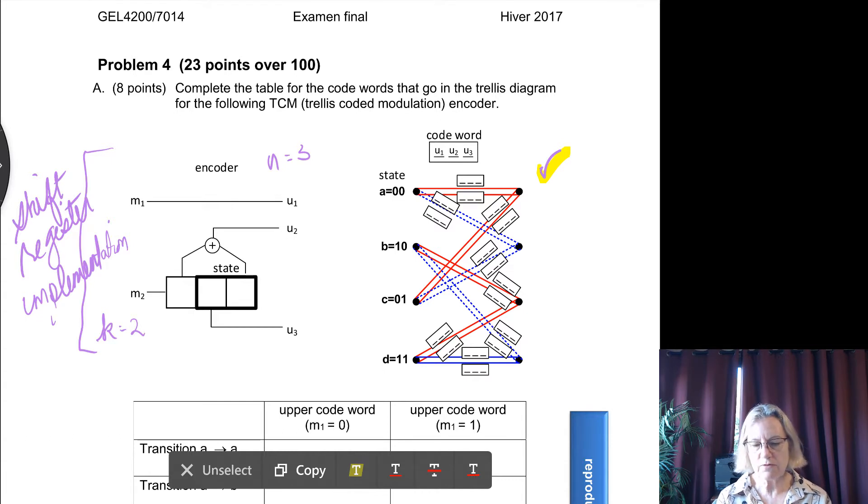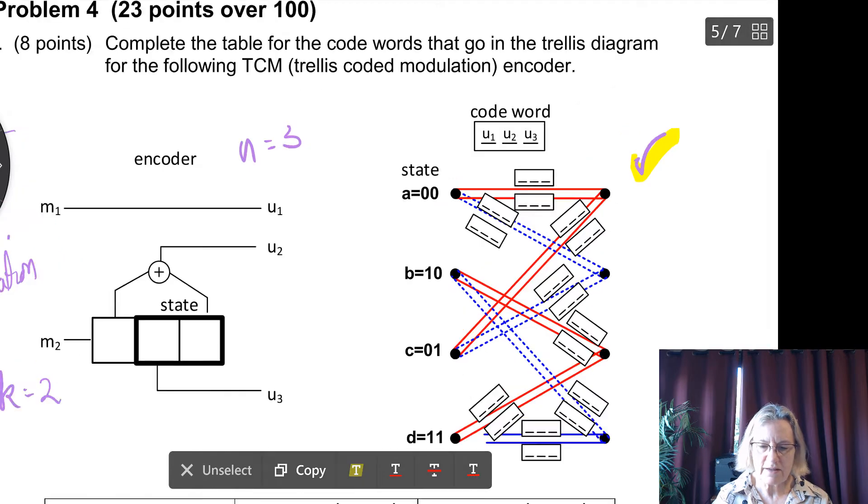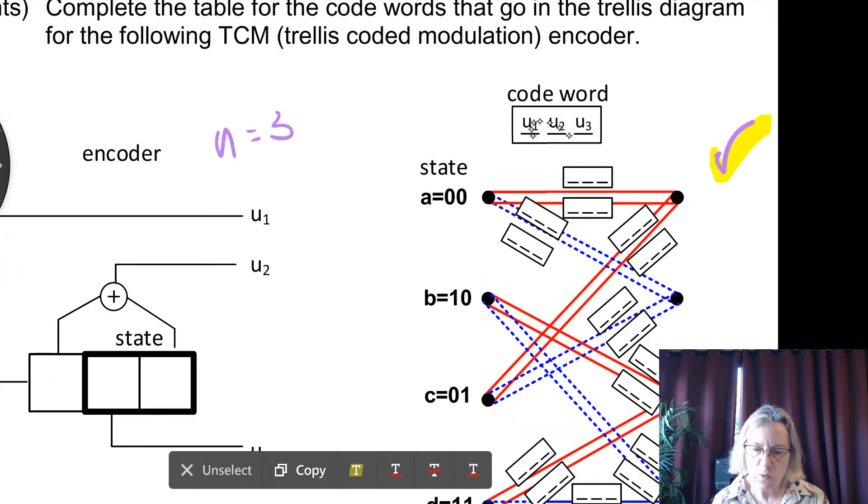This is TCM, so of course in the trellis there's going to be two entries. And there are two entries here because the first one will be either a 0 or a 1 depending on what the input M1 is. So here we have the M1 input, and it's not coded, so because of that, on every transition, like from state A to state A, there are two possibilities for M1. So we have to have two code words for this transition from state A to state A.